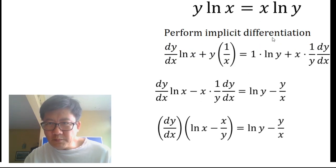We perform implicit differentiation on both sides. So on the left side, let's focus on the left side right now. We differentiate y, so we get dy/dx, and we leave natural log of x as it is. Plus, we leave y and we differentiate natural log of x. That's what we get on the left side.